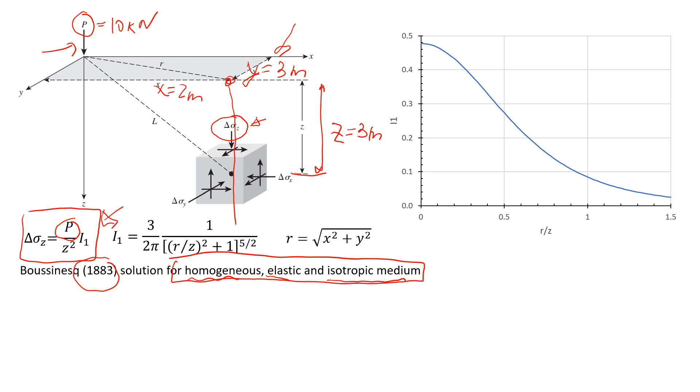So now we're going to estimate the change in the vertical stress. We use this equation. You see that in this equation, we have this component, which is called i1. And this just depends on the characteristics of this soil element. So how far is from the point P? So you will see that the only thing that we will need to find is r. And we already know z.